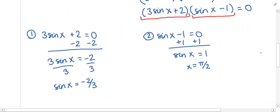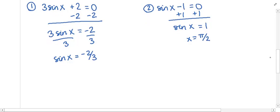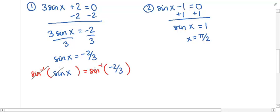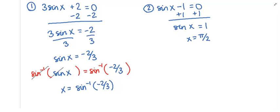Since no standard unit circle angle satisfies sin(x) = −2/3, we use the inverse sine. Taking sin⁻¹ of both sides: sin⁻¹(sin(x)) = sin⁻¹(−2/3). The sine inverse and sine cancel on the left, leaving x = sin⁻¹(−2/3). We have to compute this on a calculator. Sometimes you get decimal answers because an exact value isn't possible — here's your first example, since no angle on the unit circle has a y-coordinate of −2/3.